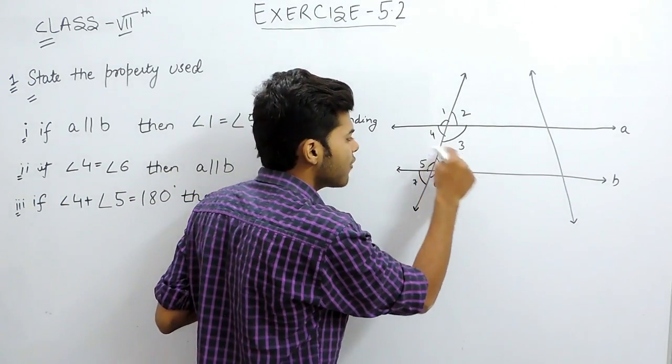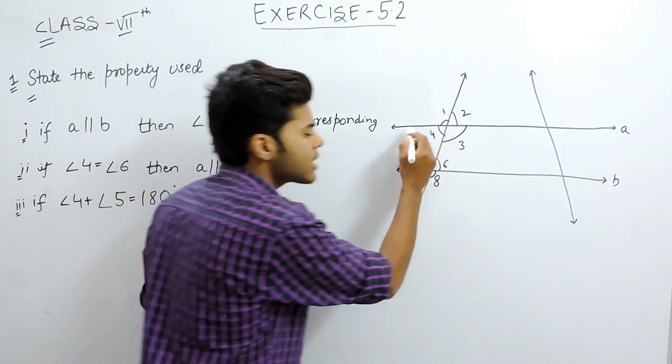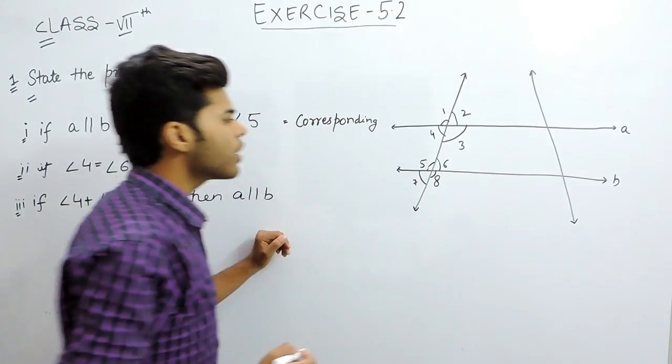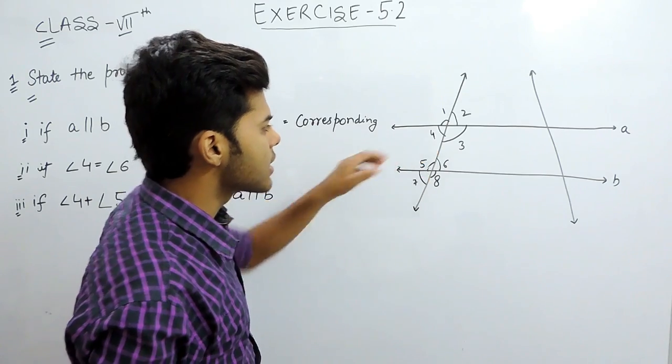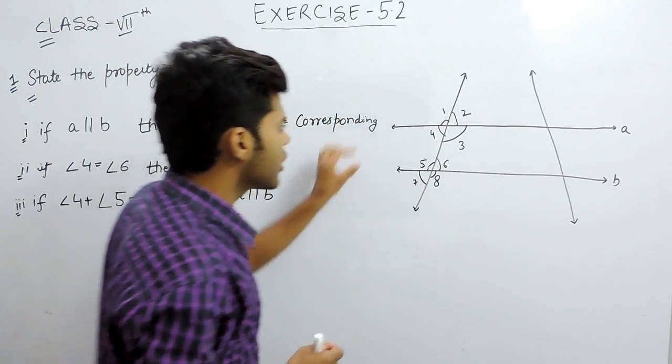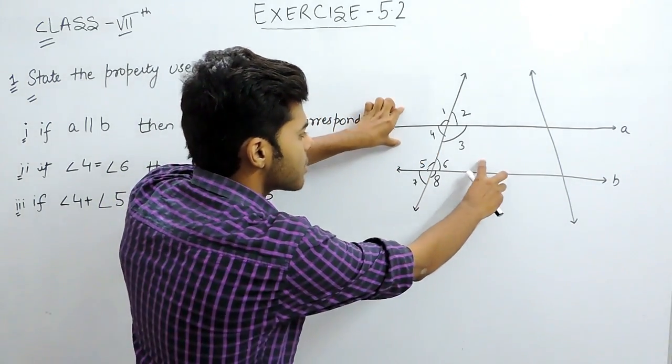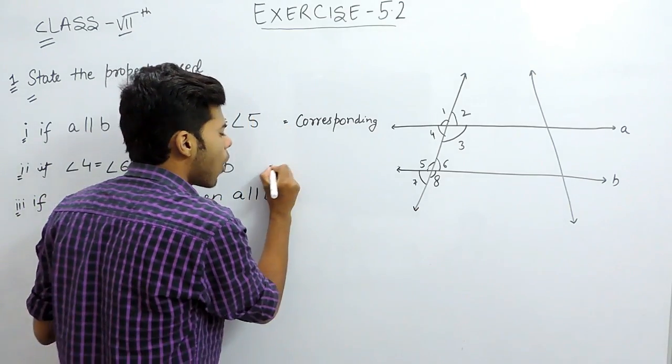Now you can see that angle 4 and angle 6, this makes a Z and you know that this is because they are alternate angles. And for alternate angles, you can see that these two lines must be parallel. So thereby alternate angle.